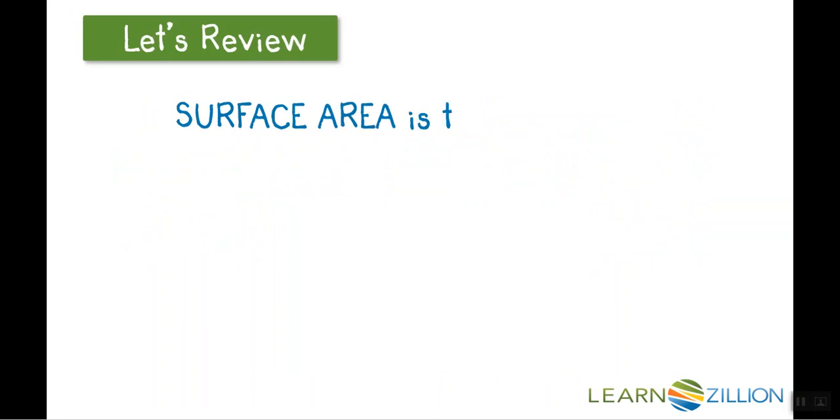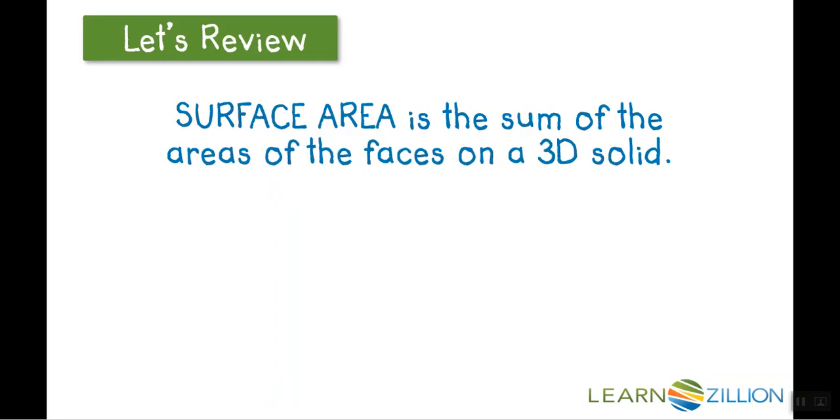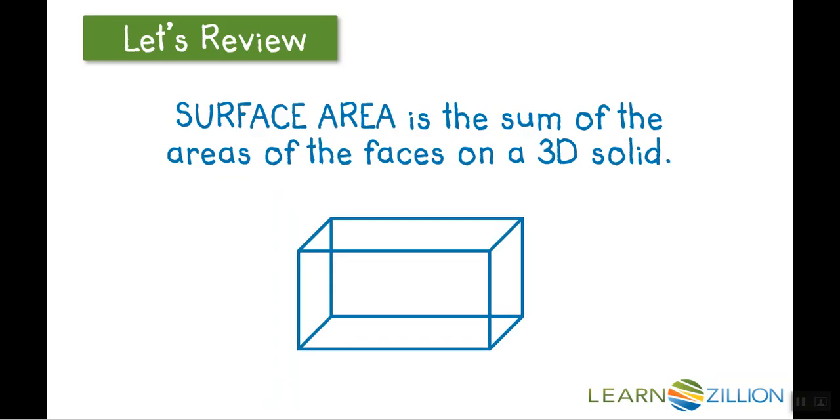Surface area is when we find the sum of the areas for all of the outside faces of a three-dimensional solid. So the outside squares used to cover the left, right, bottom, top, back, and front all added together gives us surface area.